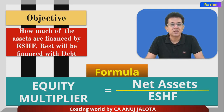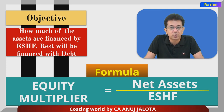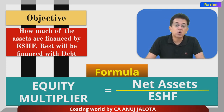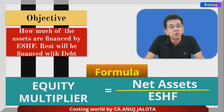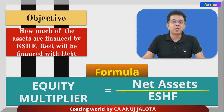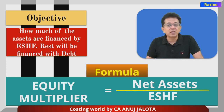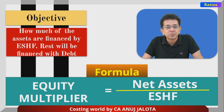Debt is a two-edged sword — it means risk because you have to pay interest, so taking more debt increases risk. But it is also beneficial because the cost of debt Kd is always lesser than Ke, so you get the benefits of trading on equity. Companies can use the Equity Multiplier to increase their ROE — if equity shareholders' funds decrease and debt increases, with the other two parts remaining the same, ROE will rise.